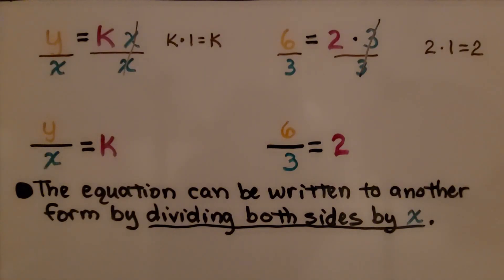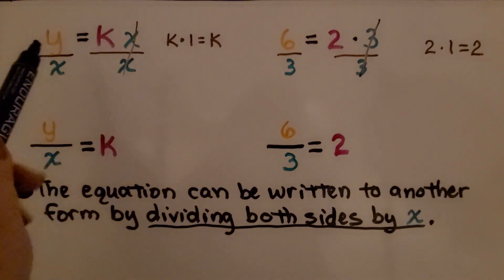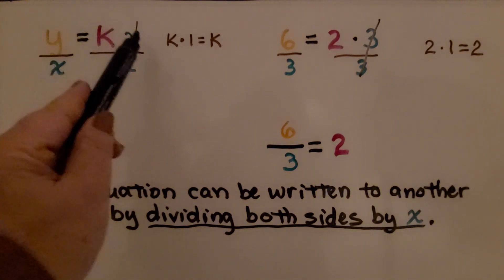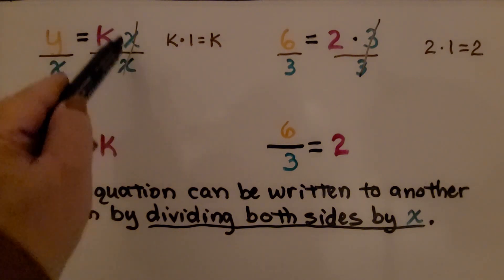Now some of you are asking, how can the equation be written in two different ways, as y equals kx, or as k equals y divided by x? What we do is, we divide y equals kx, both sides, by x.